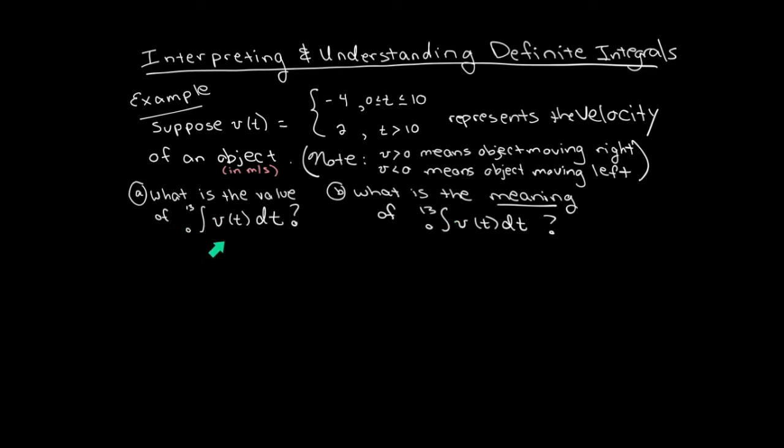We're going to have to graph the function in order to find the value of the definite integral. Here's a graph of the velocity function. Notice that t equals 0 and t equals 10 are included for velocity equals negative 4. So there's filled in dots on either side of this line. When t is strictly greater than 10, not equal, so there's an open circle here, the velocity is 2.